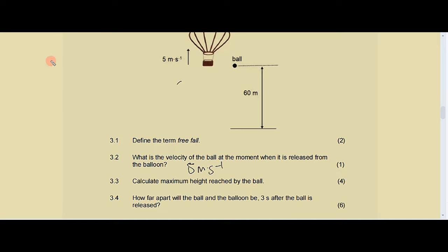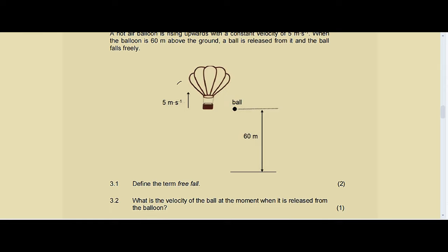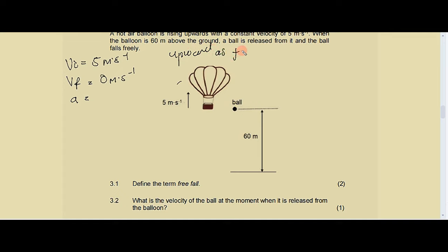Let's collect our data. We have the initial velocity of the ball as five meters per second, as discussed — it takes the velocity of the hot air balloon. At maximum height, the final velocity must be zero meters per second. Taking upward as positive, our acceleration is negative 9.8 meters per second squared. We are looking for delta y — the maximum height. Now we look at the formula sheet to find the most suitable formula.